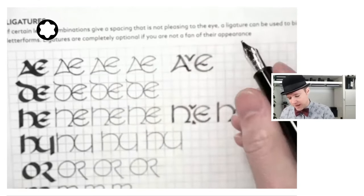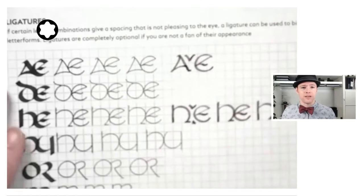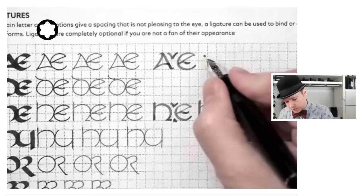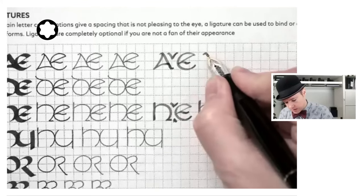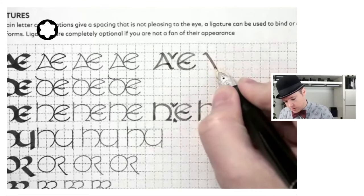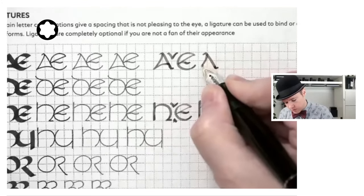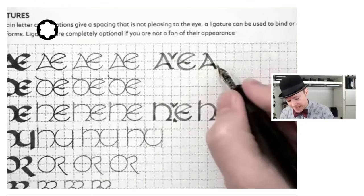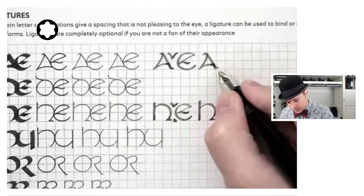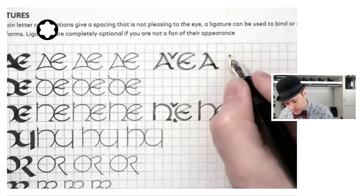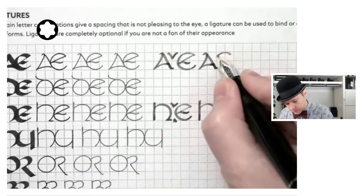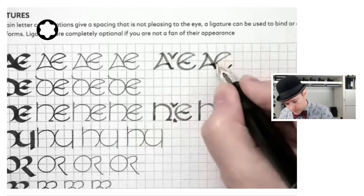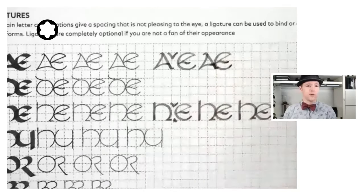So this is one that can be a good use of the ligatures. So once again, we will do our A coming down to the bottom corner and then to the left corner and a curve over. And now we're going to visualize that E is fitting in right here. So we get our E like so.